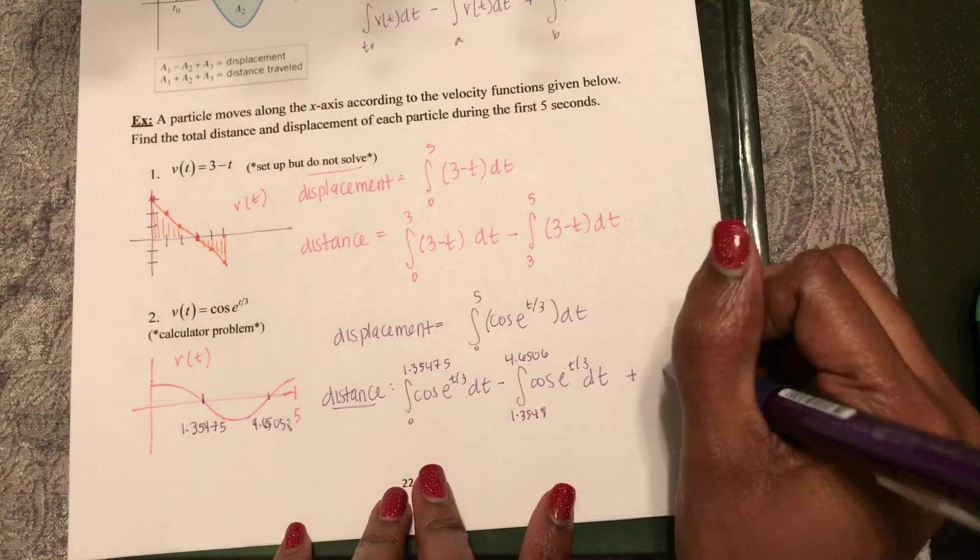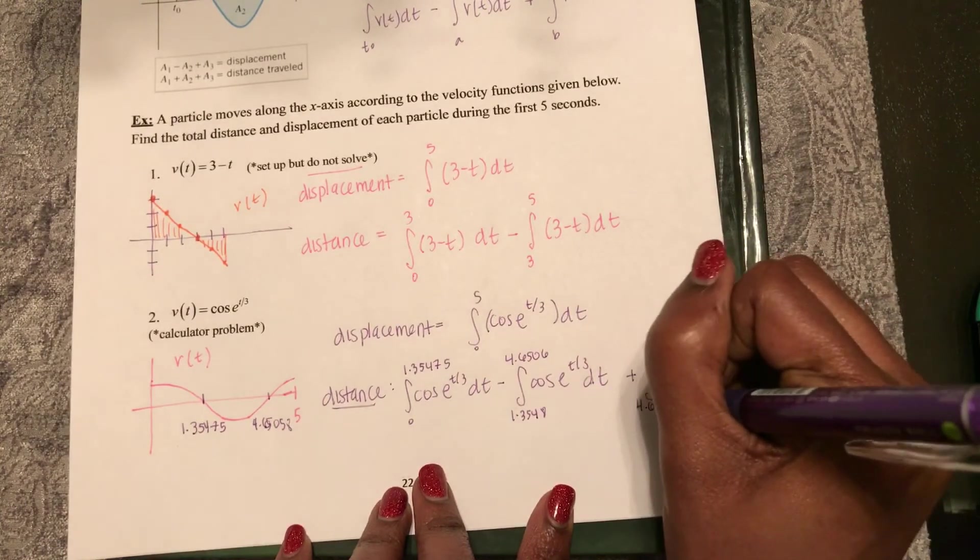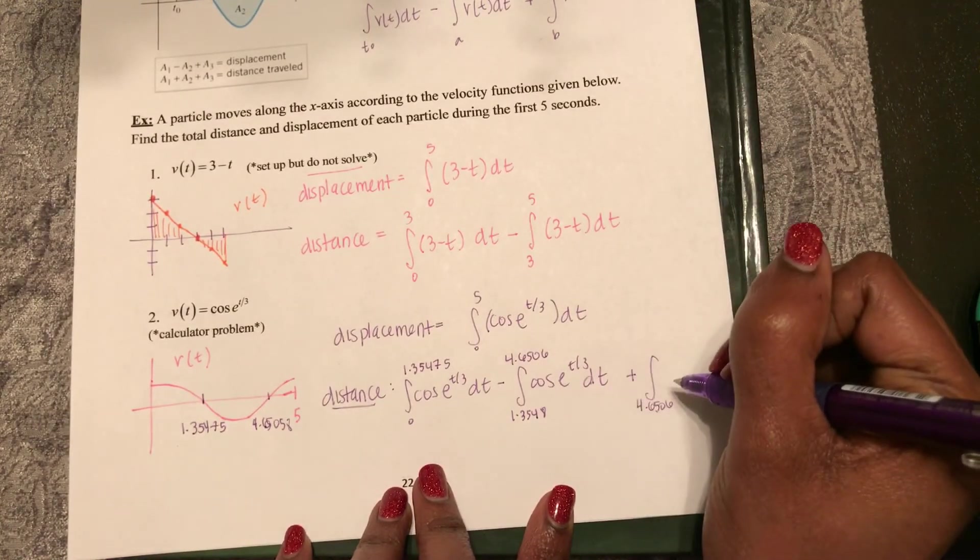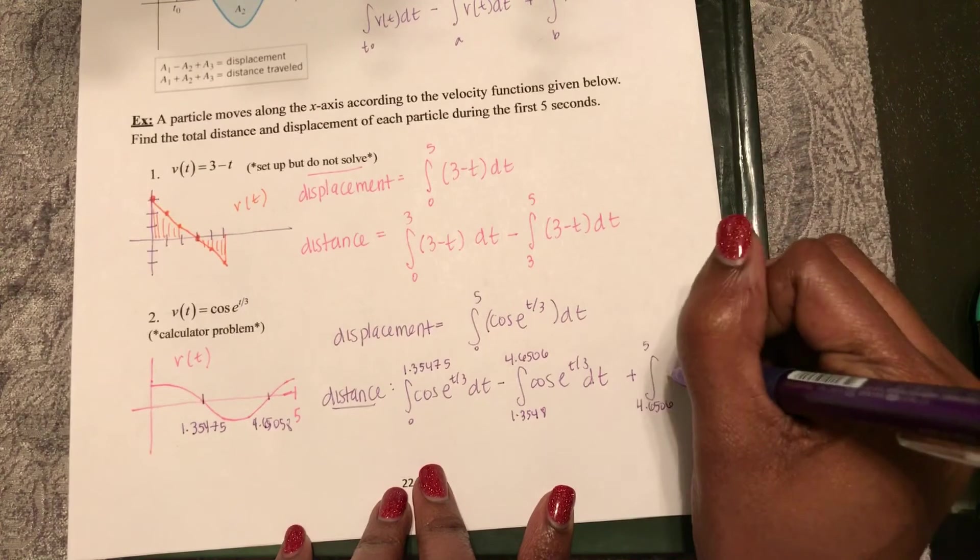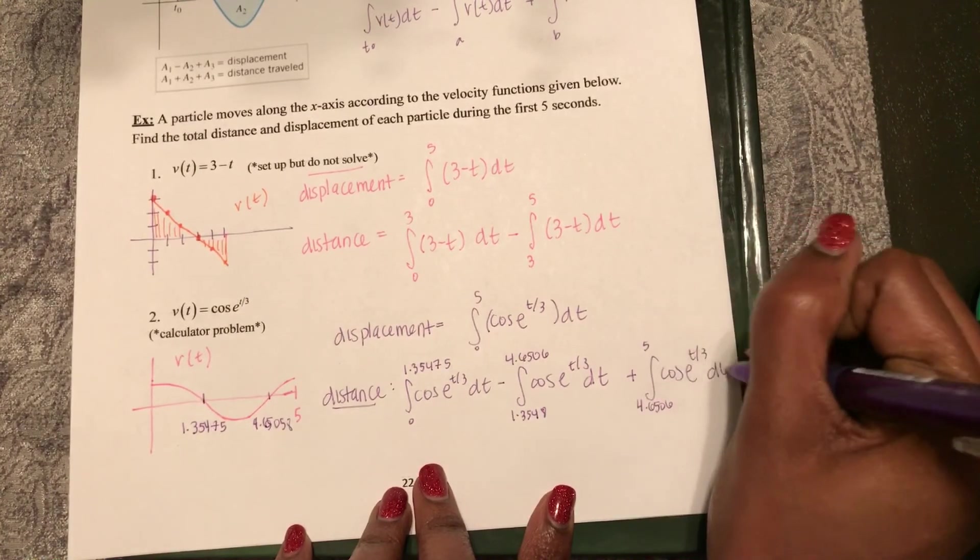So then last but not least, my final integral from 4.6506 to 5 of cosine e to the t over 3 dt.